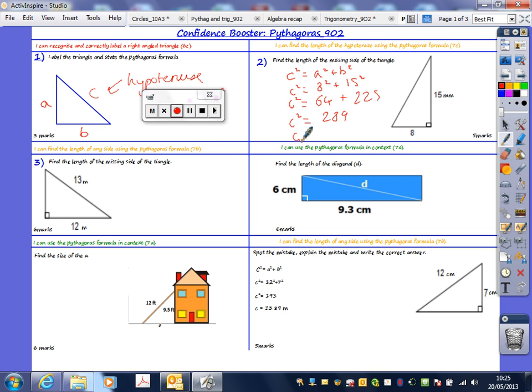To get C, what do we need to do? Square root. 17. So you need to add all that to get all five marks. You need to show the formula all the way to correct. If you've not put the formula, you lose a mark.